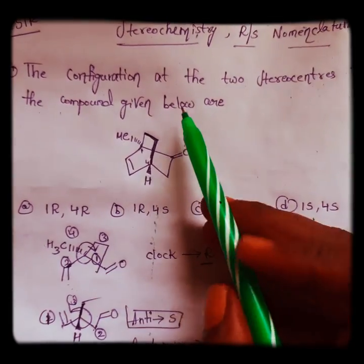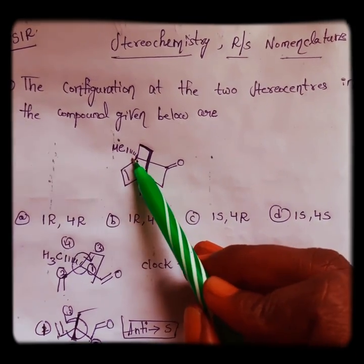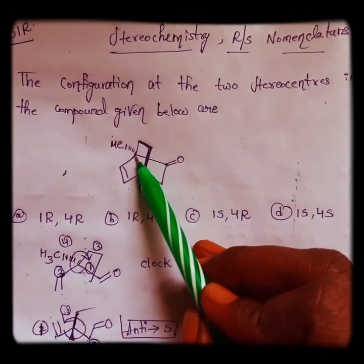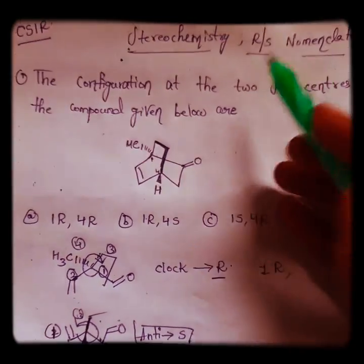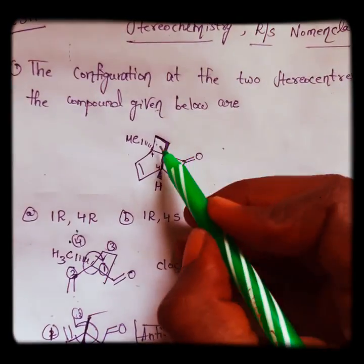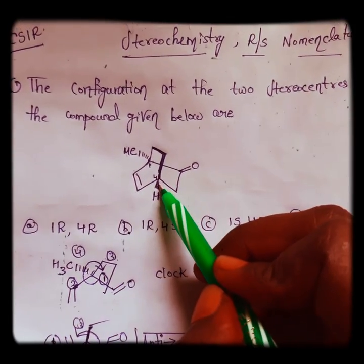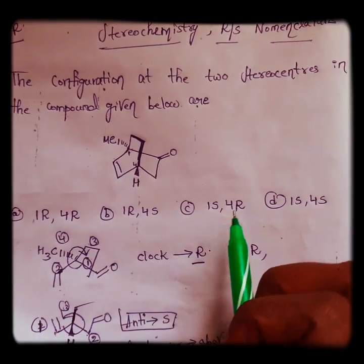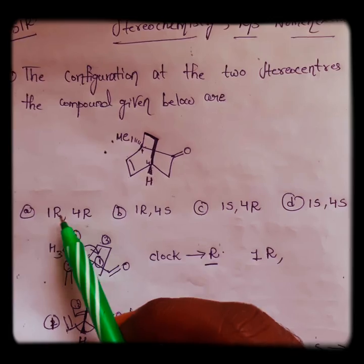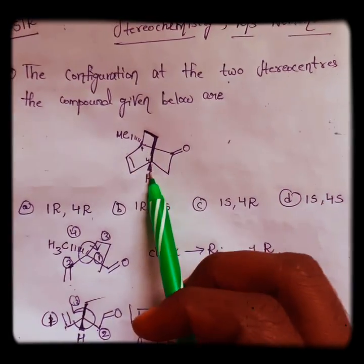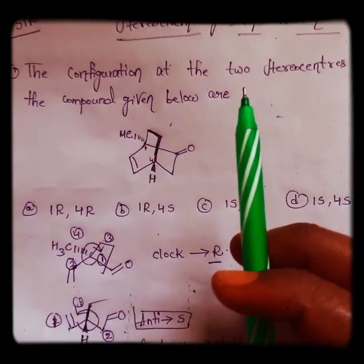So we need to first observe which are the stereocenters, then we have to assign configuration to these stereocenters. Okay, let us start. Now there is numbering here, 1, 2, 3, 4. So according to our options, first and fourth position, we have to assign R or S at the one and fourth positions.